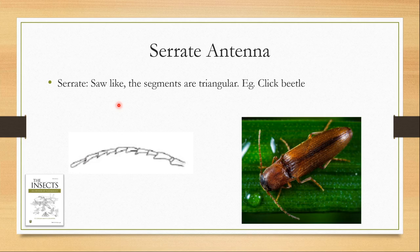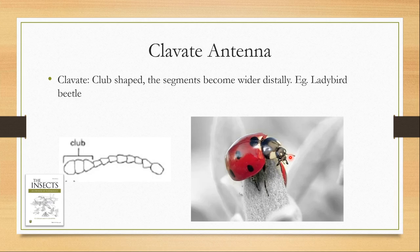The next type is the clavate antennae. Clavate antennae is club-shaped — the segments become wider distally. This is found in ladybird beetles.